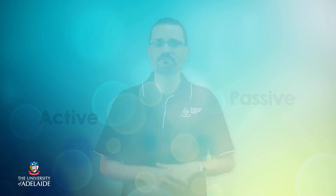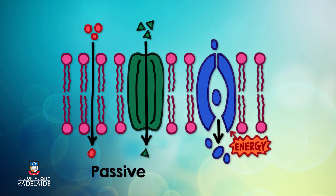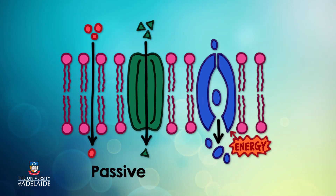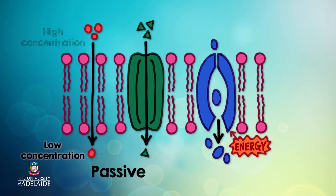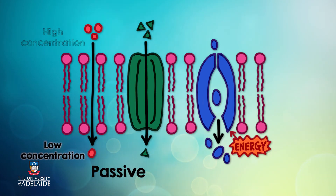Earlier I briefly mentioned how plasma membrane proteins help molecules move into and out of cells — now it's time to explore this concept further. Transport of substances across the plasma membrane is either passive or active. In passive transport, substances move across the cell via their own kinetic energy, meaning no energy input is required from the cell. Substances move down their concentration gradient, from an area of high concentration to low concentration — this is called diffusion. Oxygen and carbon dioxide are examples of substances that move via passive transport.